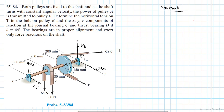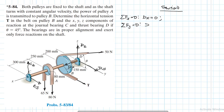Now let's apply the equations of equilibrium. For summation of forces in the X direction, we have Dx, and since there are no other forces in that direction, Dx equals zero. For summation of forces in the Y direction, we have Dy plus Cy, and we will also get two components from the 50-newton force.